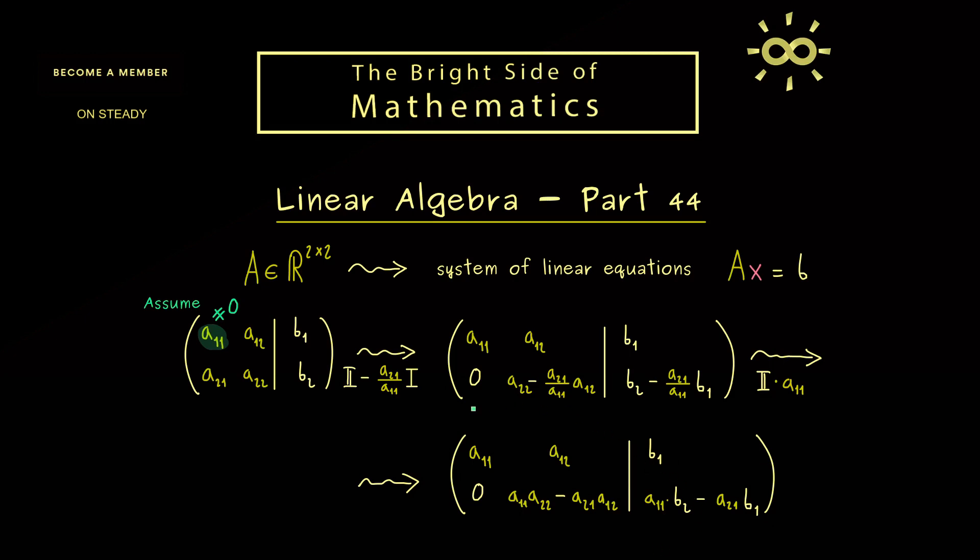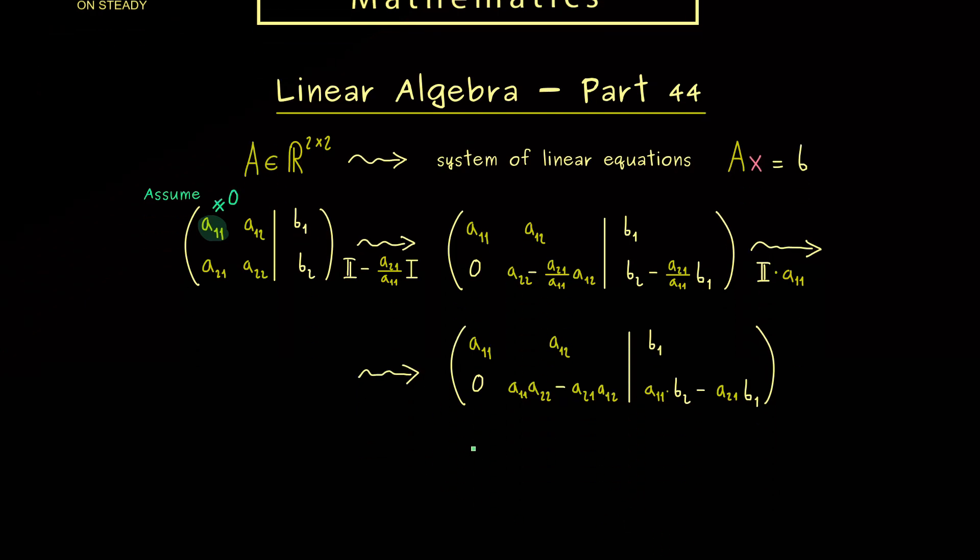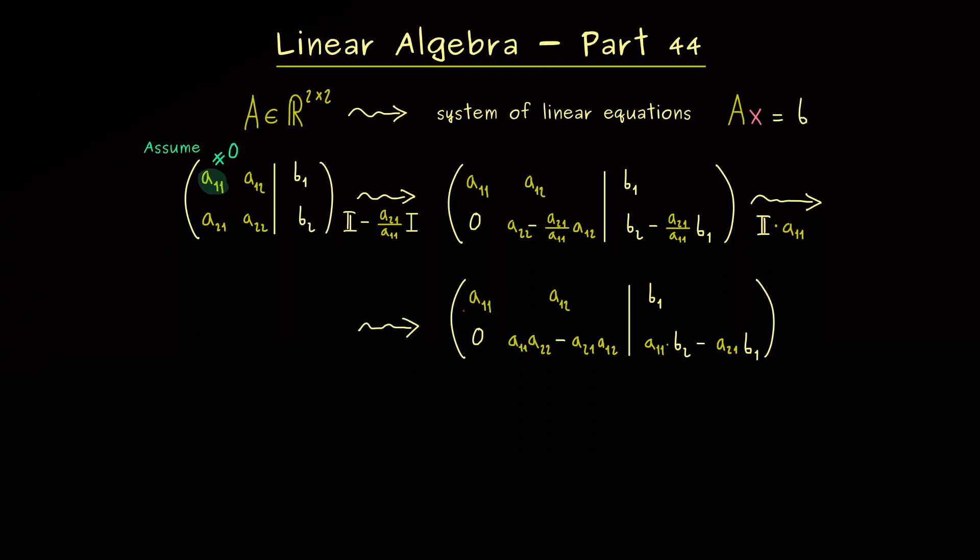The important thing is now our row echelon form on the left-hand side. There, by assumption, we already know that we have one pivot here. And now the question is, do we also have a pivot here one step below? And now of course, by definition, this is a pivot exactly when it's non-zero.